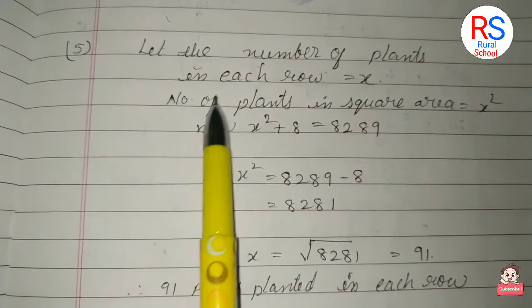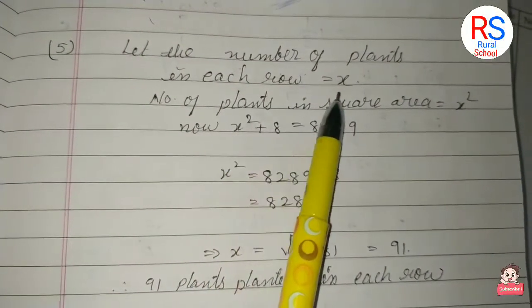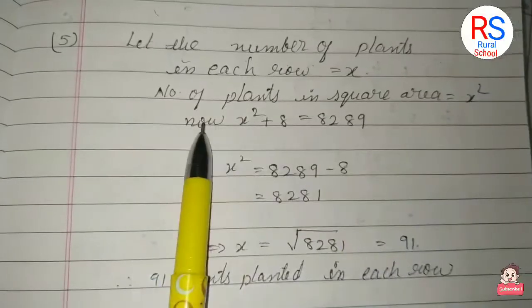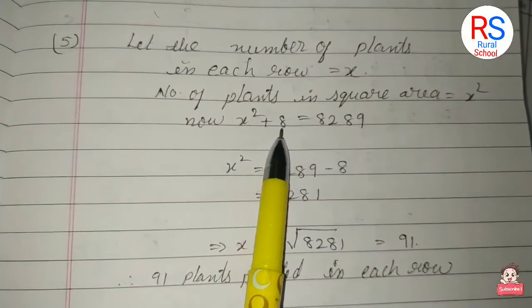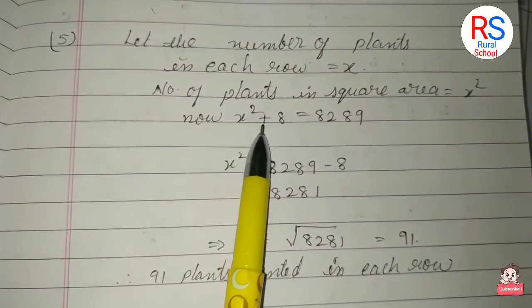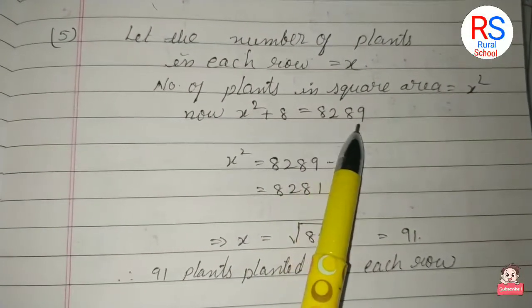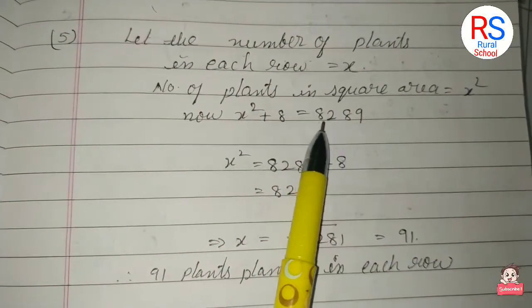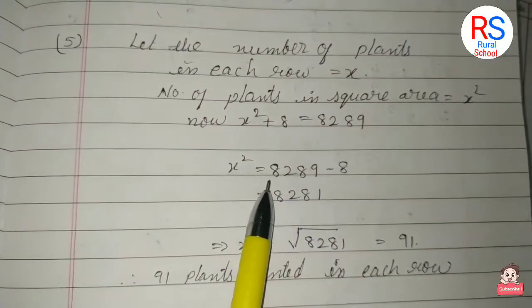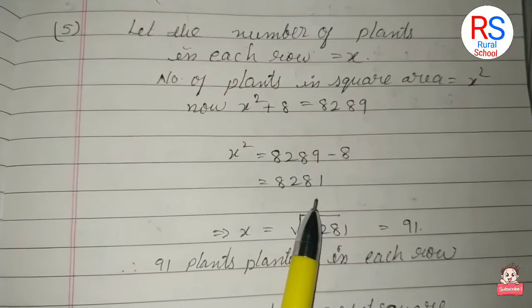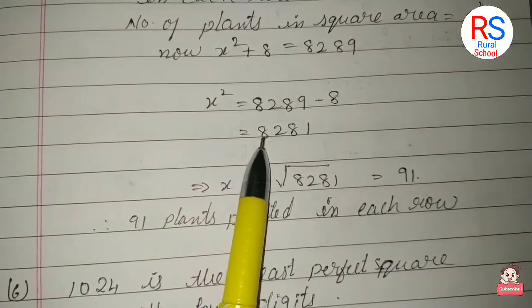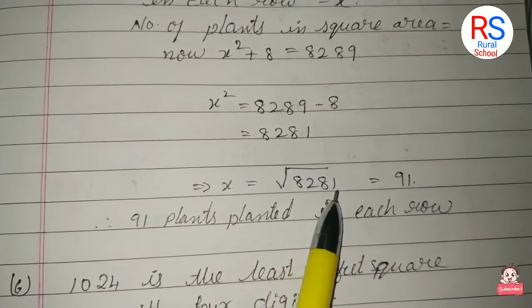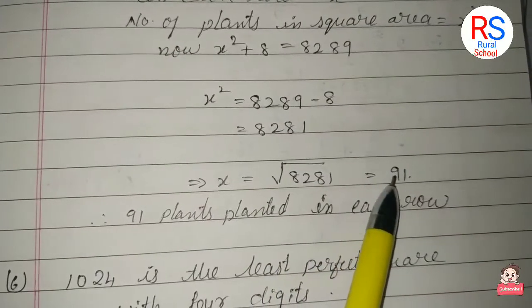So let the number of plants in each row, in the form of a square area, be x². Now x² + 8 = 8,289. So x² = 8,289 minus 8, which equals 8,281. Next, x = √8,281.